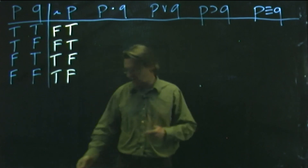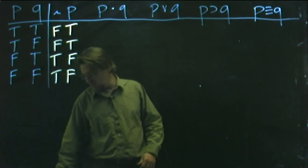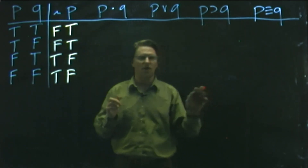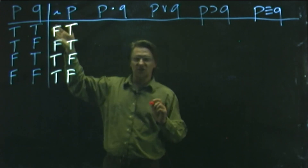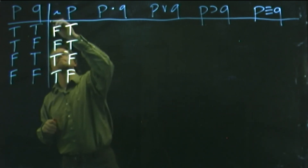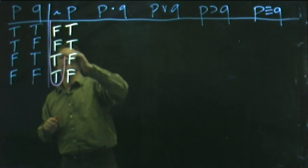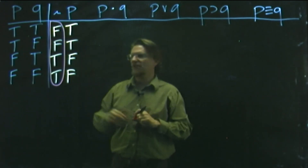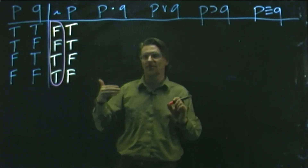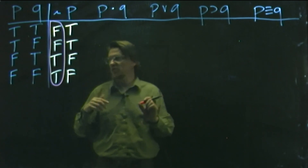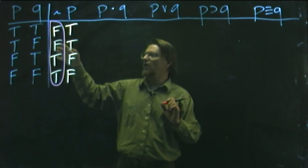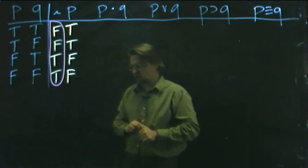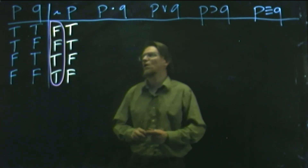I want to emphasize just the pattern here: when P is true, the tilde is false; when P is false, the tilde is true. It just flips the value to the other one. In 5.2 you learn about main operators, and in each of these statements there is just one operator in every case, so the main operator is the only operator. I want to circle the main operator column, because this is the sort of values for that tilde — that's what we're interested in here: how these logical operators turn out.